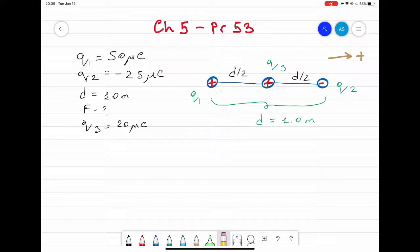In this problem we have two charges initially: q1 which is 50 microcoulombs, q2 minus 25 microcoulombs, and a distance between these two charges q1 and q2 is one meter. Now the q3 charge which is 20 microcoulombs positive charge